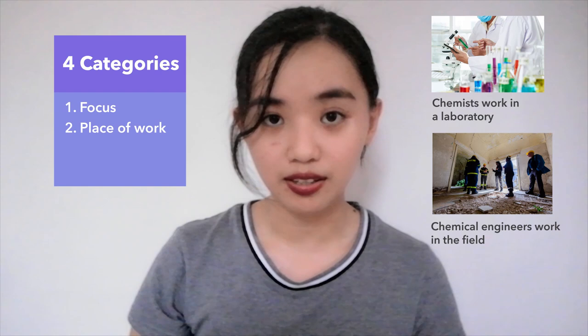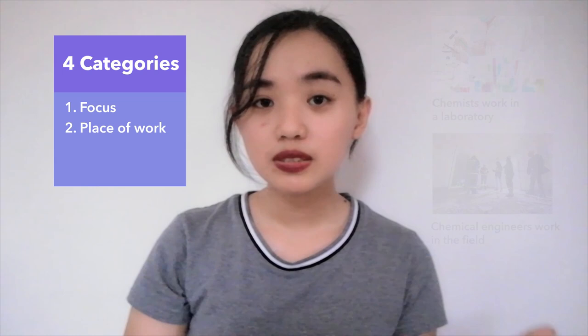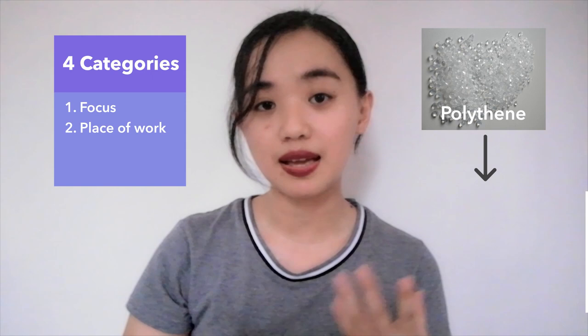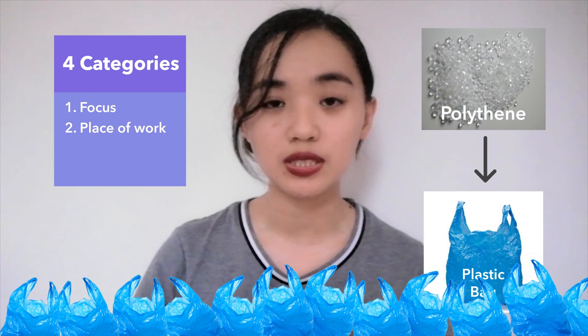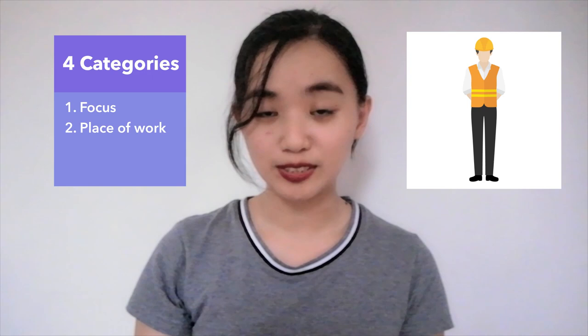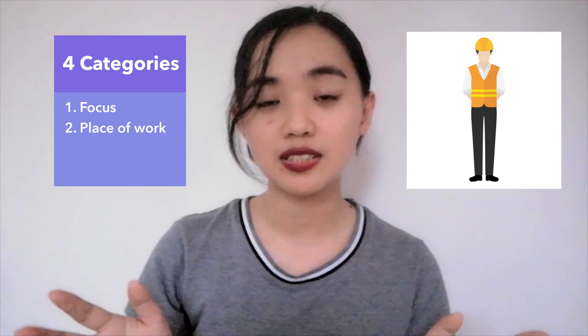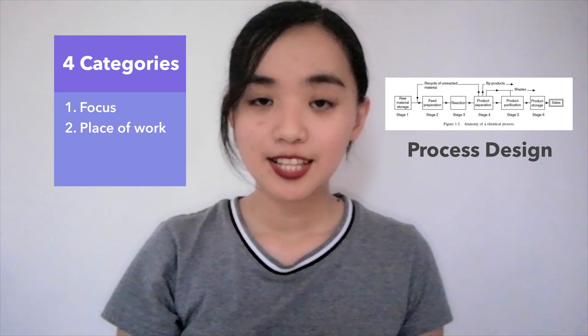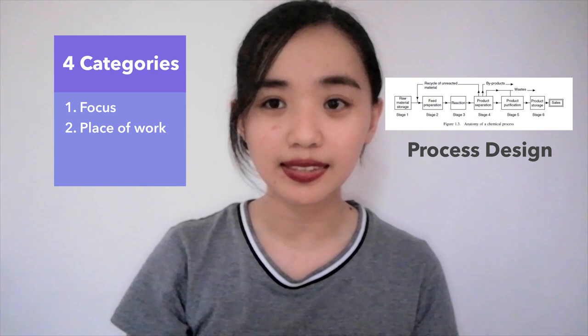Second item: Place of Work. In an ideal situation, chemists work in a laboratory and chemical engineers work in a plant. Going back to our example — how does a chemical engineer turn a polyethylene substance into a plastic bag at an industrial, mass-production scale? They study and analyze a series of processes and use these to design a plant. Chemical engineering students have subjects on process design and plant design, which are quite complicated.